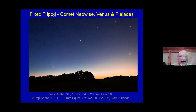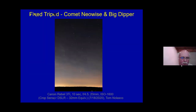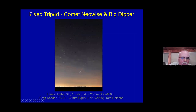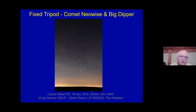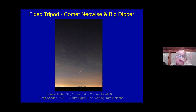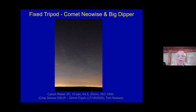Here's NEOWISE with the Big Dipper, shot at 20mm to squeeze both in — the handle is at the top left, the bowl below, and the comet at the bottom. This was taken in the evening sky a few days after the morning shots, because the comet was so far north it was briefly visible in both morning and evening. Some clouds add pink color and texture to the whole picture.